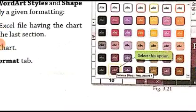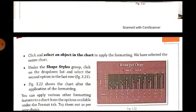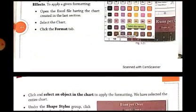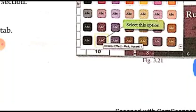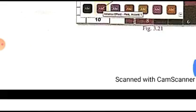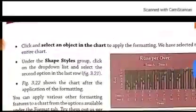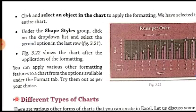In this example, we are selecting the second option in the last row just for demonstration purposes. Once you click on that option, as shown in figure 3.22, the chart will be displayed after the application of this formatting. Whatever shape style you have chosen will be applied to your whole chart, because we had selected the whole chart before clicking the Shape Styles button.